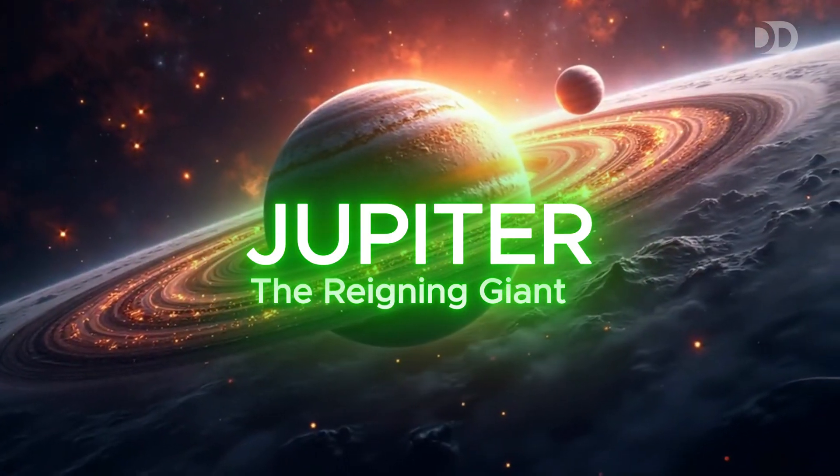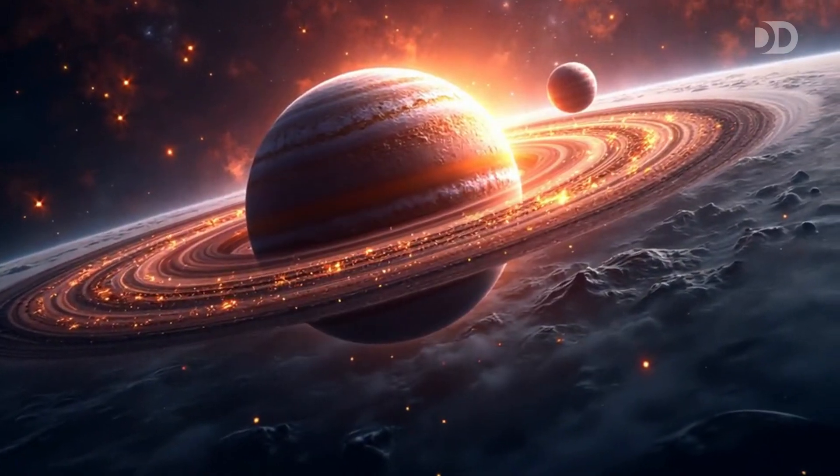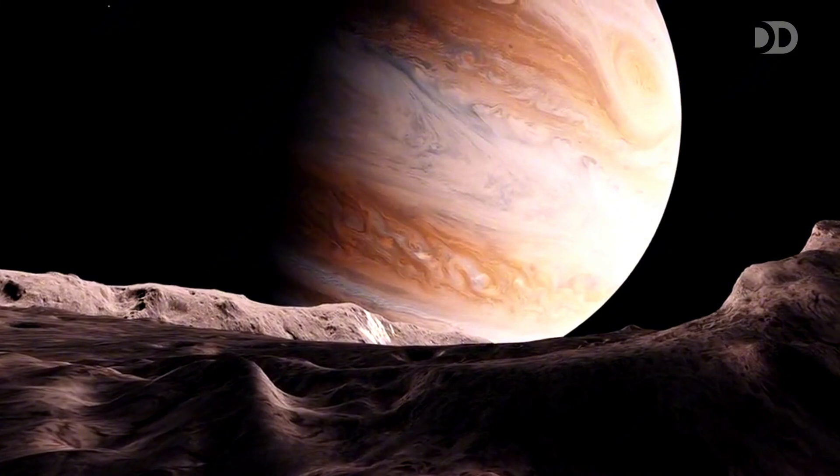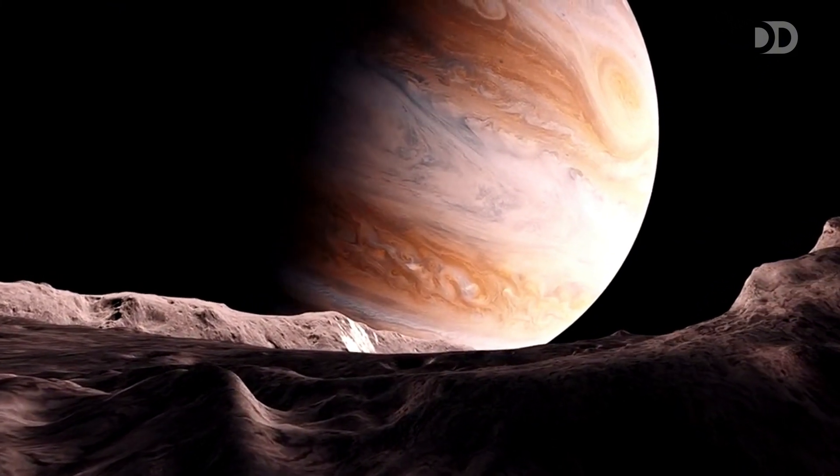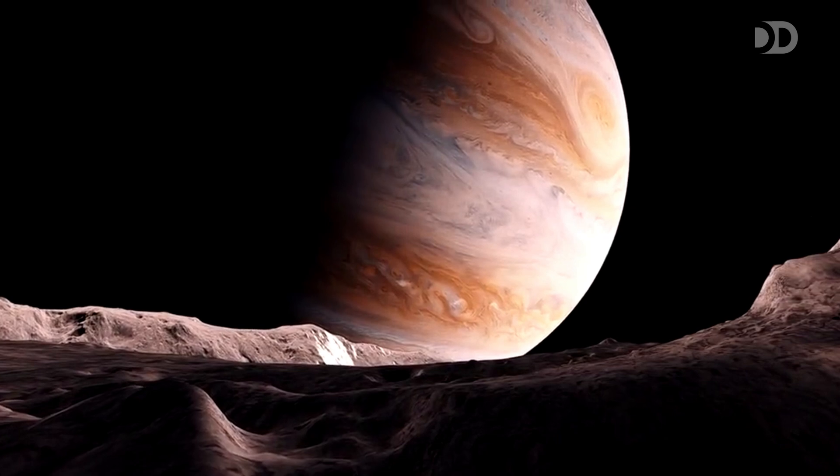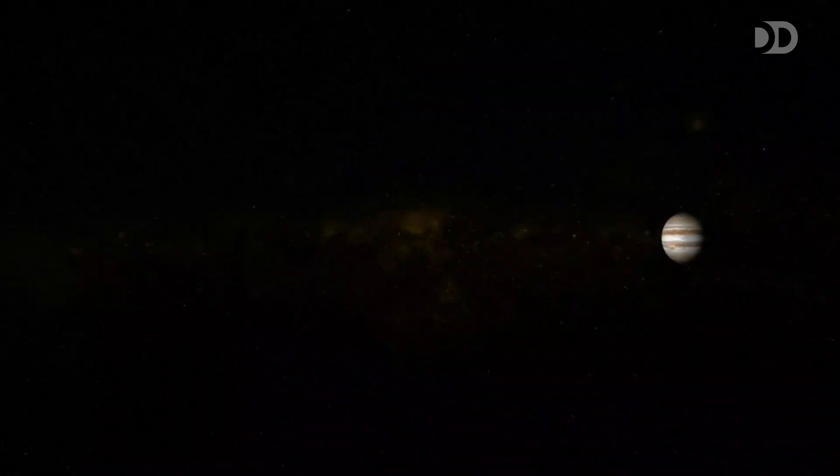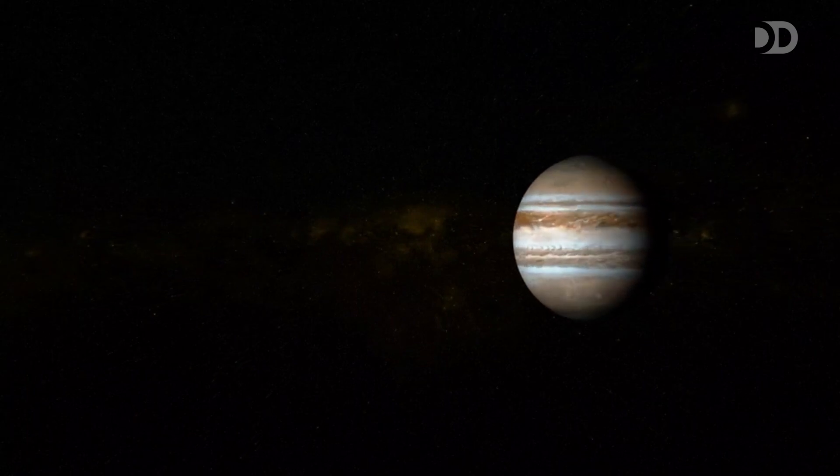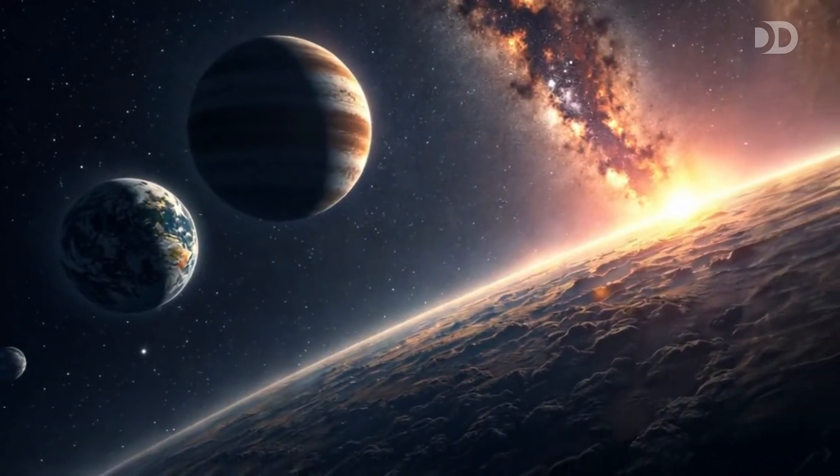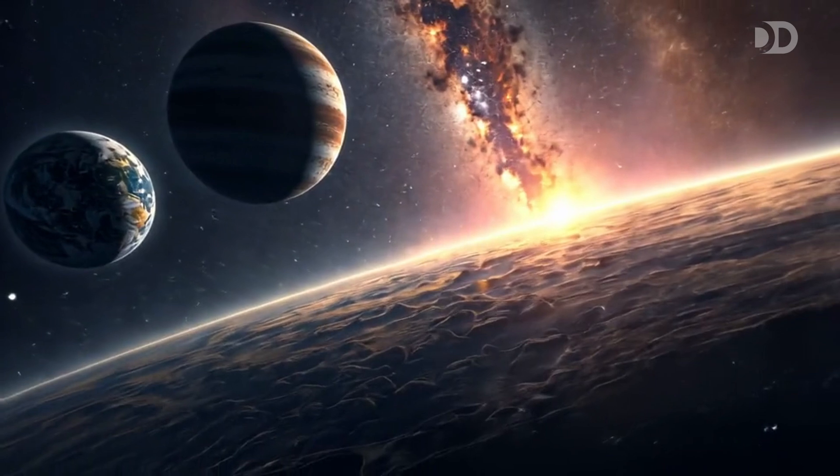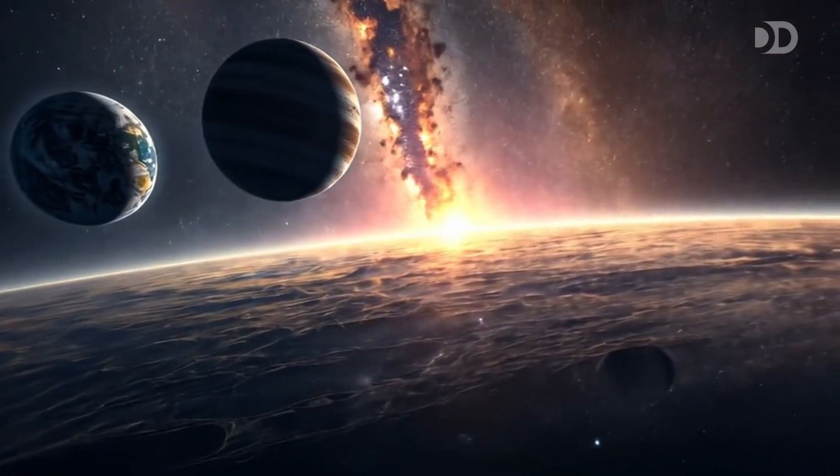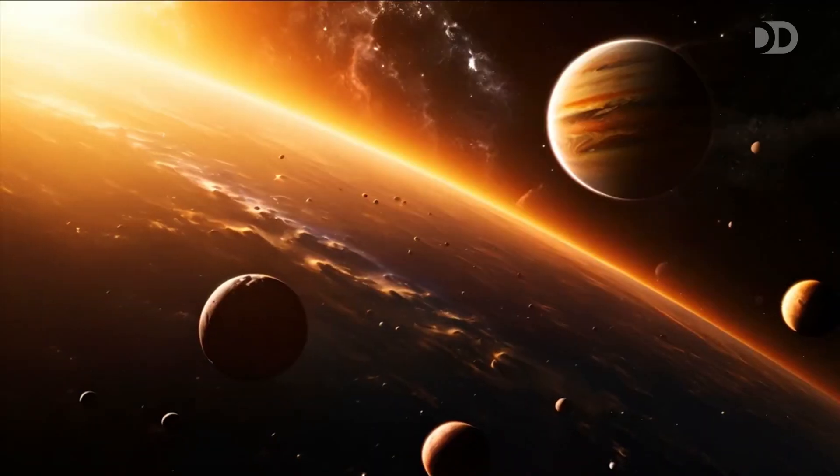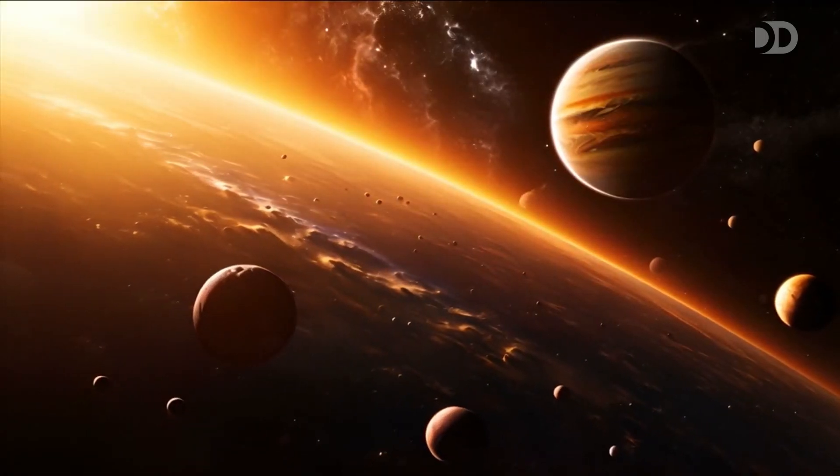Prepare to be awestruck by Jupiter, the king of our solar system. This gas giant dwarfs all other planets, its swirling clouds and storms a spectacle of power. The great red spot, a storm larger than Earth, has raged for centuries. Deep within, metallic hydrogen generates a magnetic field and dazzling auroras. Jupiter's gravity shapes the orbits of asteroids and comets, influencing the solar system's architecture. Its size and mass command respect, even in the vastness of space. Onward to the next giant.